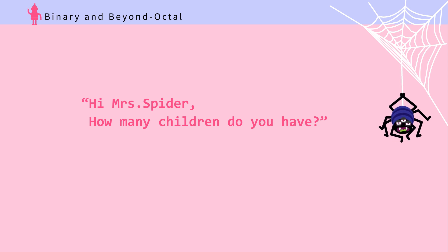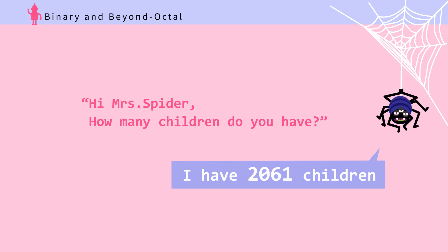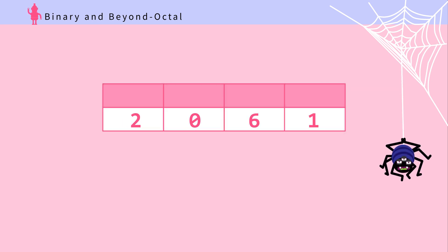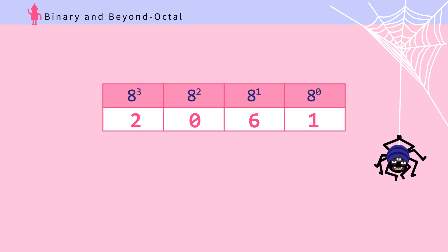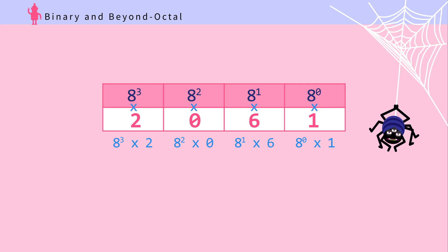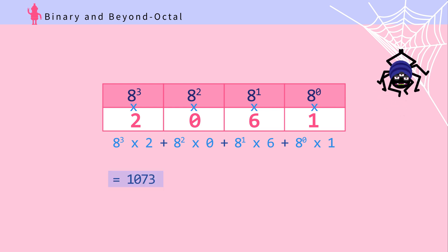Hi, Mrs. Spider. How many children do you have? I have 2-0-6-1 children. How many is that? Mrs. Spider can count using numbers 0 to 7. Let's see what 2-0-6-1 is in base 10 or decimals. First, lay out the octal number 2-0-6-1. Step 2: On top of each number, put the place value from the rightmost place — 8 to the 0, 8 to the 1, 8 to the 2, 8 to the 3. Step 3: Multiply the place value with the octal digit to get the actual value of each place. Step 4: Add them all up. That is 1,073 children.